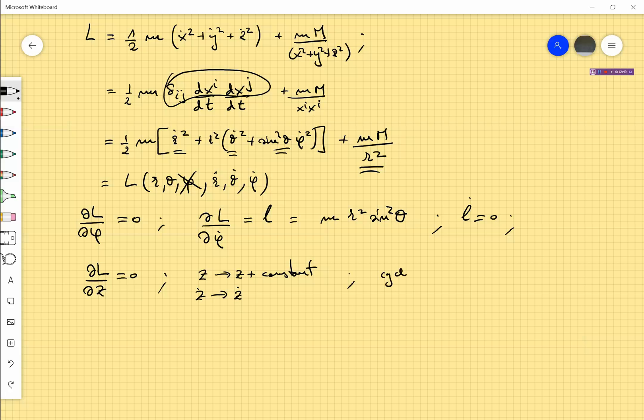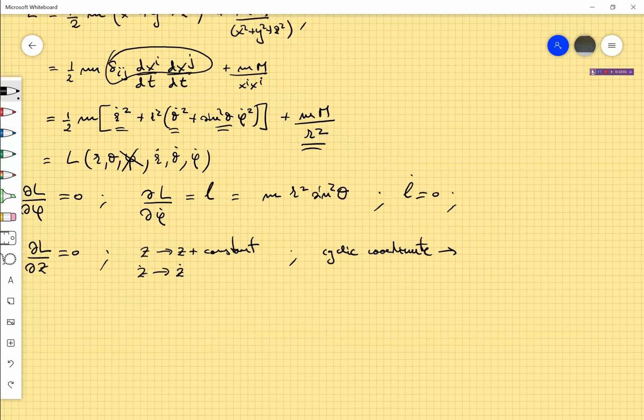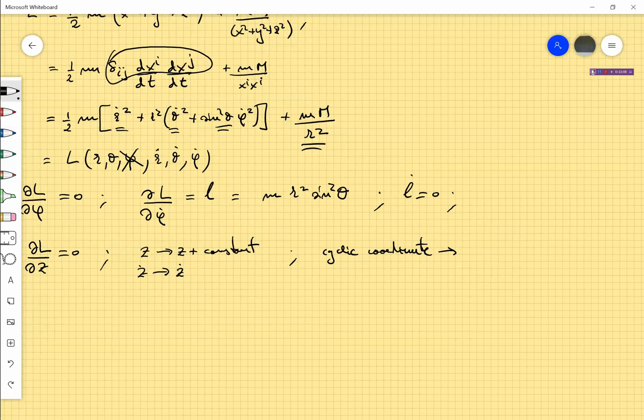So a cyclic coordinate, existence of a cyclic coordinate is associated to some invariance, invariance under some transformation, and invariance under some transformation is what we call a symmetry transformation. The fact that systems of a cyclic coordinate is associated to some symmetry of the Lagrangian.